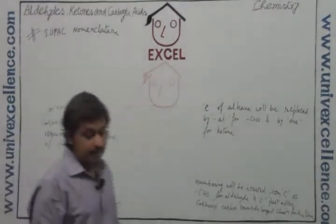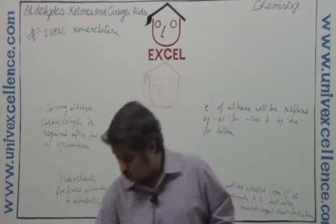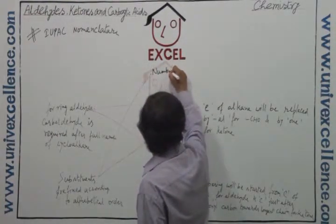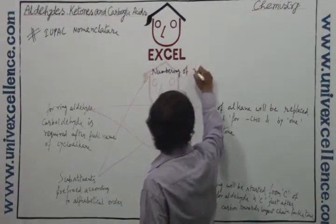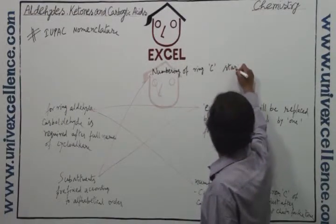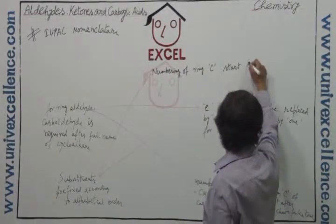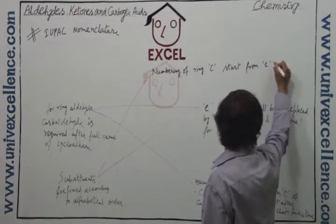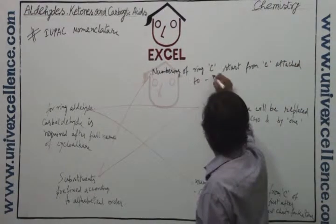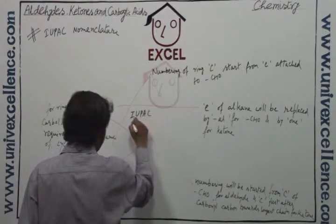The fifth rule is that the numbering of the ring carbon starts from the carbon attached to the CHO. So this is the system for IUPAC nomenclature.